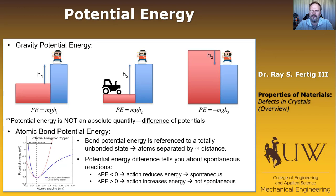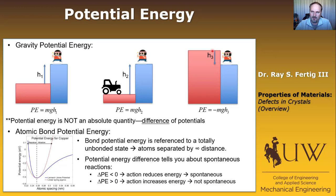The potential energy difference tells you something about spontaneous reactions. If the reaction reduces the potential energy — for example, if a person walks off the edge of the platform, potential energy is reduced as they fall — those would be spontaneous reactions. In contrast, climbing up in an elevator is not spontaneous; I'm required to put in energy to make that happen.